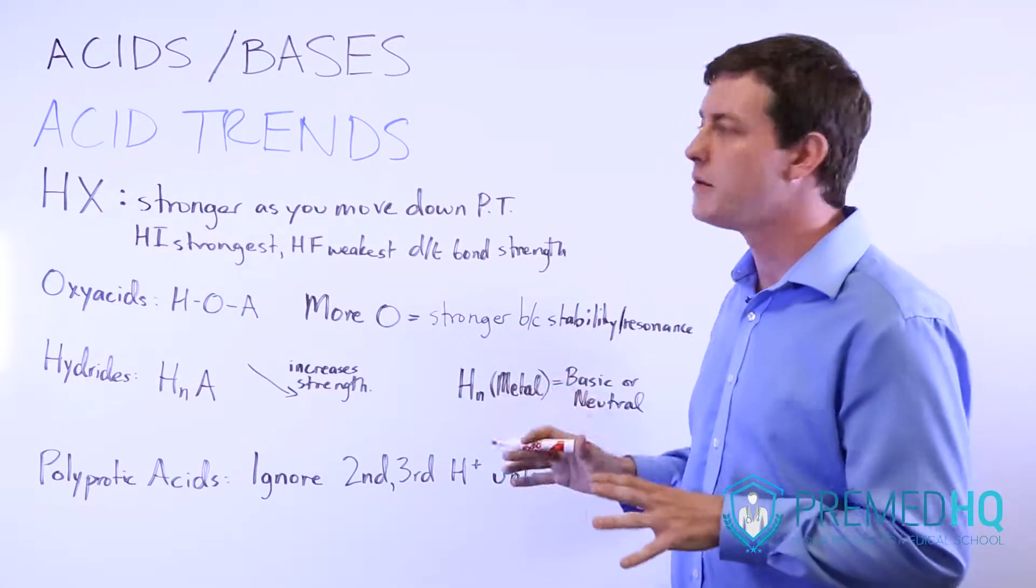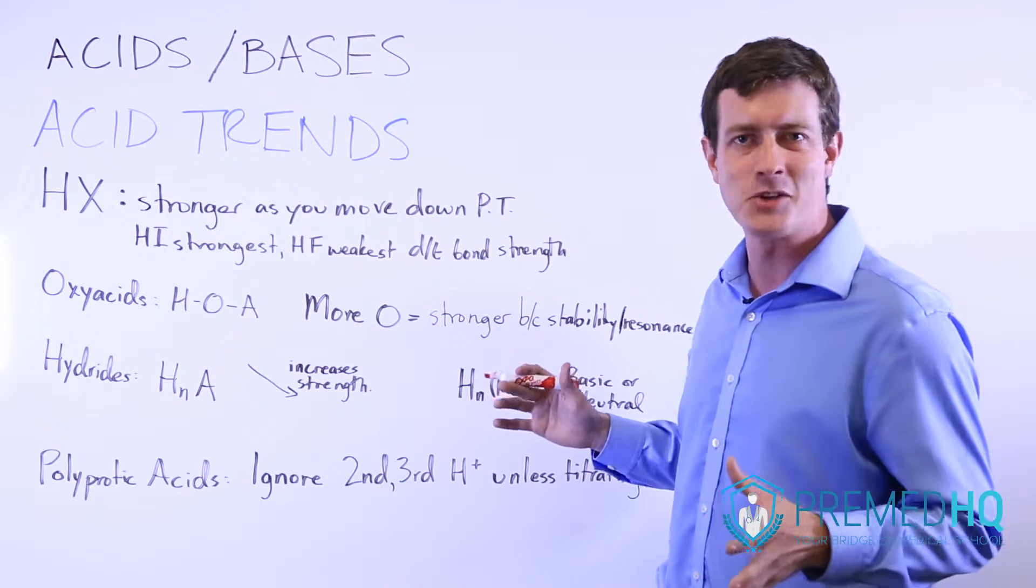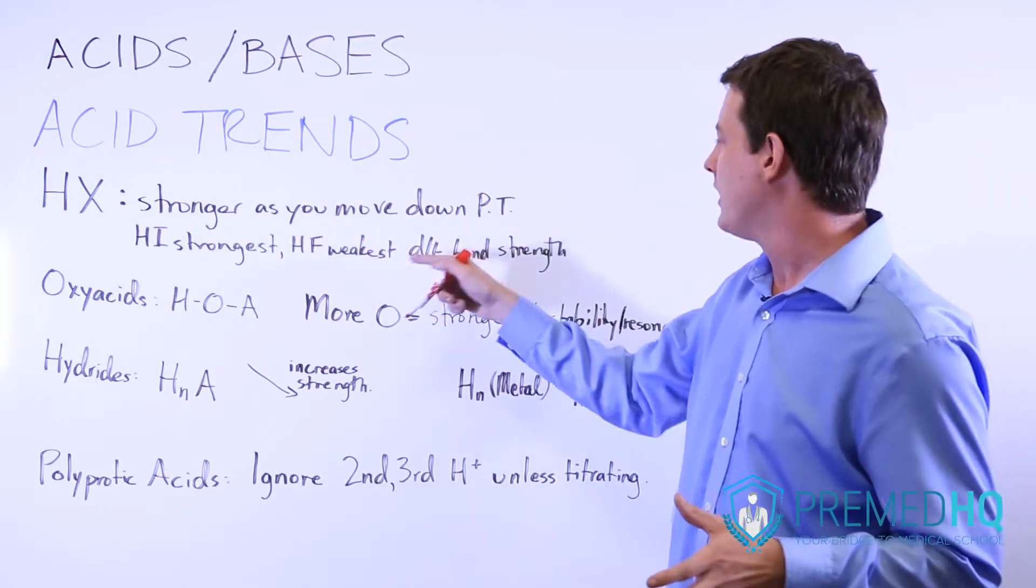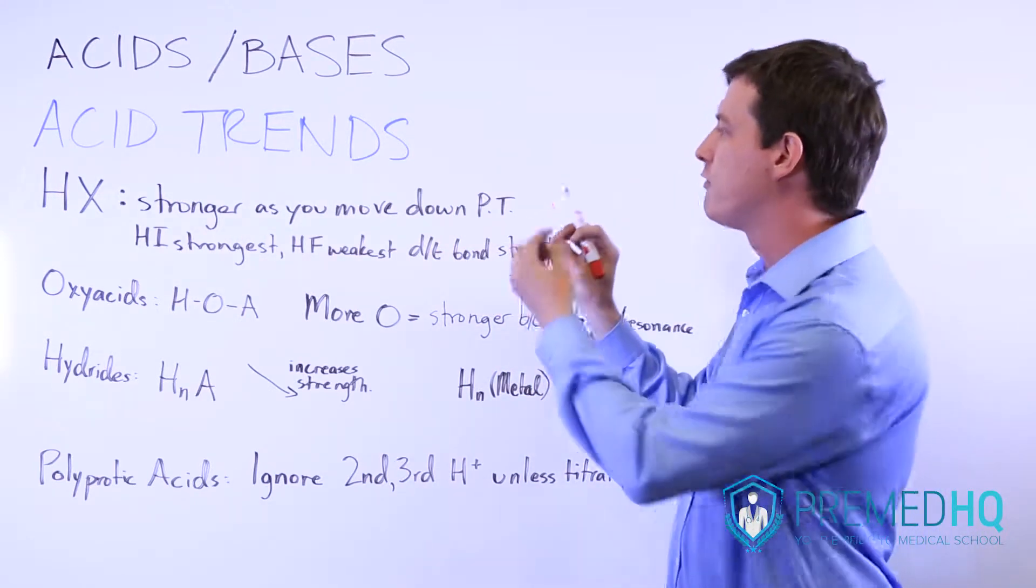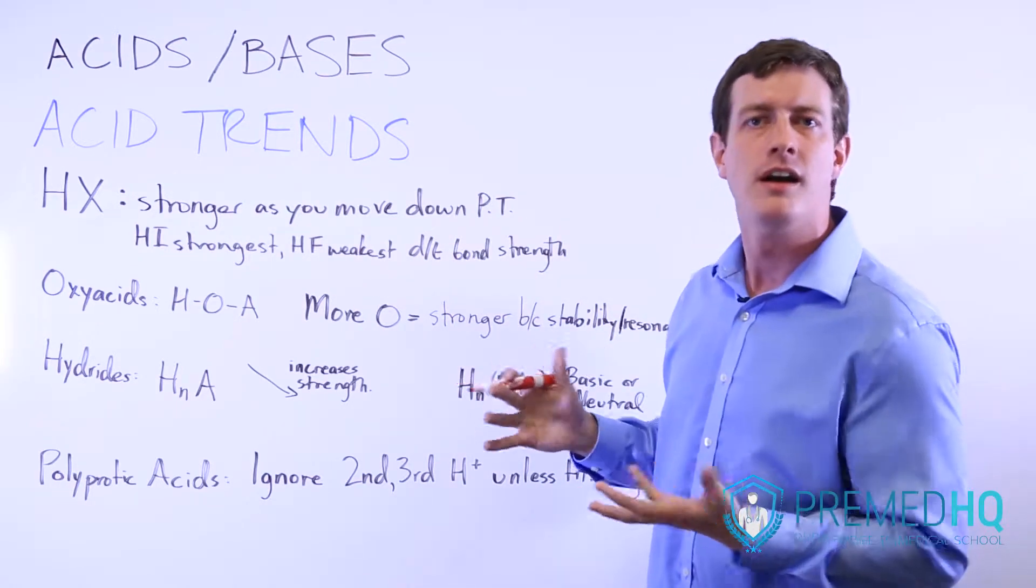It still dissociates quite a bit, but not enough to where you can assume 100% dissociation. And so HF is the weakest of all the halo acids because of the strength of that bond between the F and the H that makes it weaker than HCl, HBr, and HI.